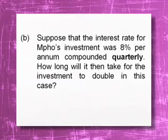But now the problem is, what about quarterly? We need to look at an example. Suppose that the interest rate for this investment was eight percent per annum compounded quarterly. How long will it then take for the investment to double in this case?